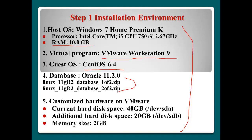Please download these two files from Oracle's website before you start installation. For the customized hardware on VMware, I'm using 40GB for the CentOS system, with device name /dev/sda. I will add one more hard disk for Oracle installation, size 20GB with device name /dev/sdb. Memory size right now is 1 gigabyte for CentOS 6.4, but I encourage you to use 2GB to support Oracle database.